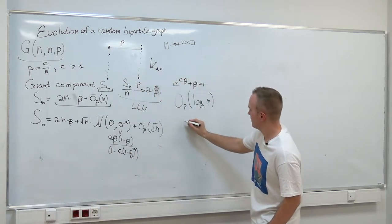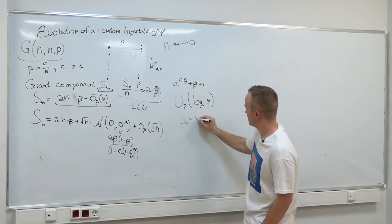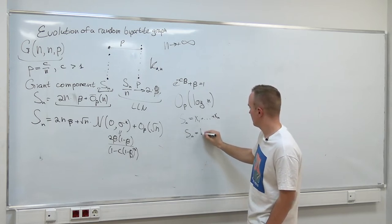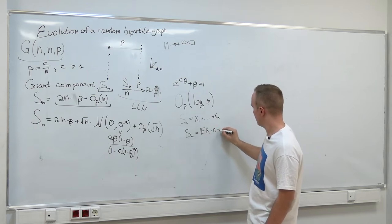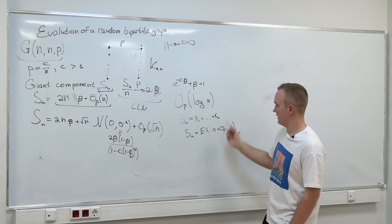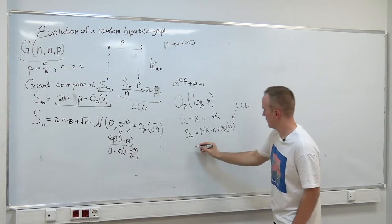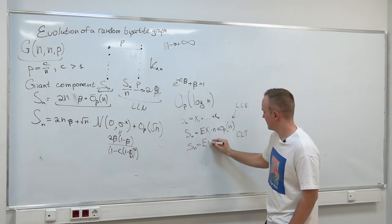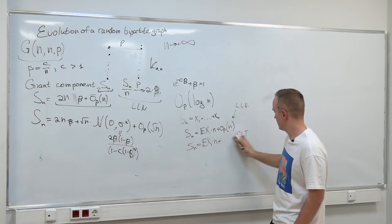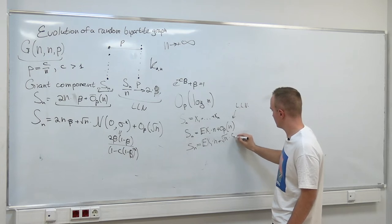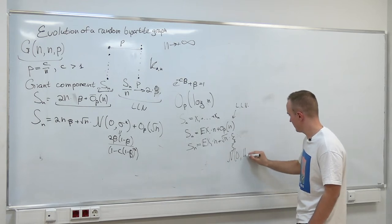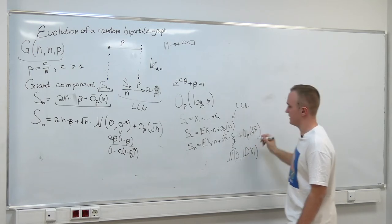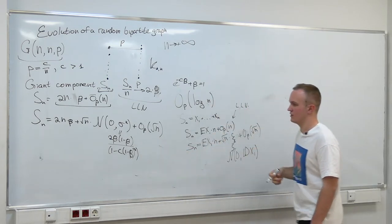We know from the law of large numbers that if S_N equals x_1 plus x_N for large N, then S_N equals the expected value of x_1 times N plus something o(N). That is the law of large numbers. The central limit theorem says S_N equals expected value of x_1 times N plus square root of N times some xi, where xi is N(0, variance of x_1), plus something small. Our result is an even more precise concentration for the value S_N.